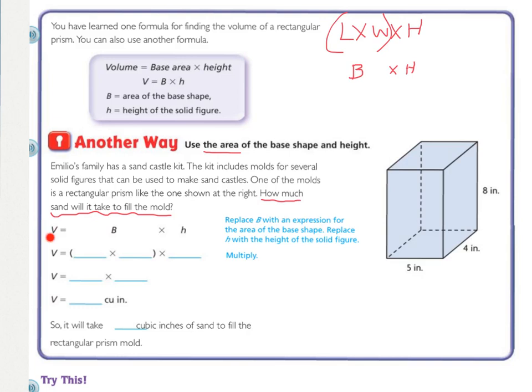So the first thing, we have volume equals base times height. We need to replace the B with an expression for the area of the base shape. Remember, the base shape is this bottom right here, and we can see that it is a 5 by 4 rectangle. So that's a 5 by 4 rectangle, and then the height is right here, which is 8. So the area of the base, 5 times 4 is 20, and our height is 8.